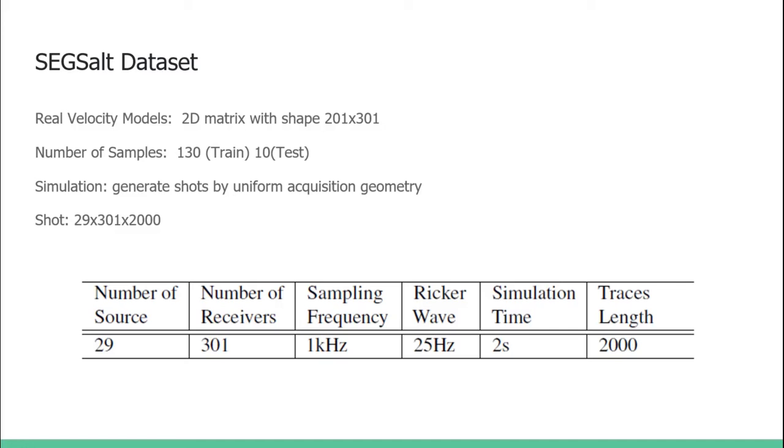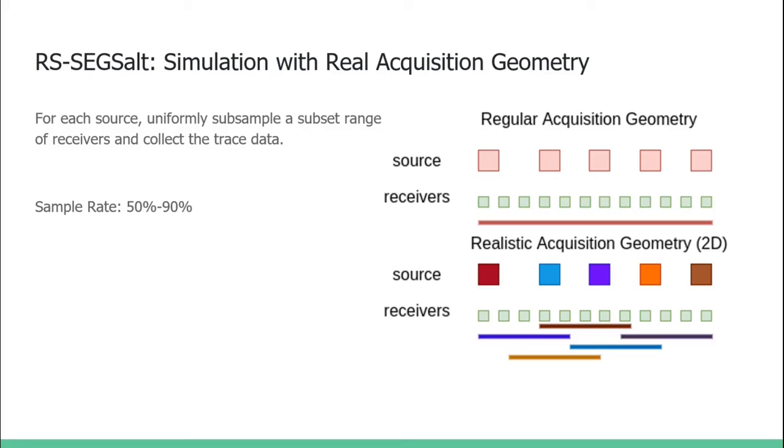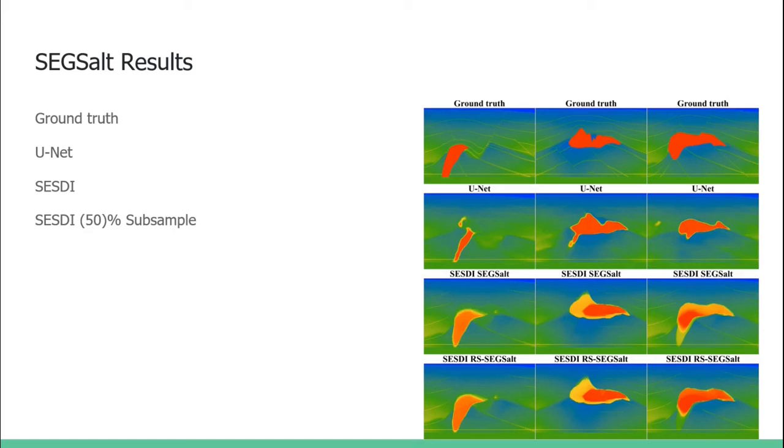We also introduce RS SEGSalt, a simulation with real acquisition geometry. For each source, we uniformly subsample a subset of receivers and then collect the trace data. The sample rate is from 50% to 90%. Let's revisit the visualization results. We can see that SESDI with 50% subsample could achieve better results than U-Net. This indicates both scalability and robustness of SESDI in real scenarios.